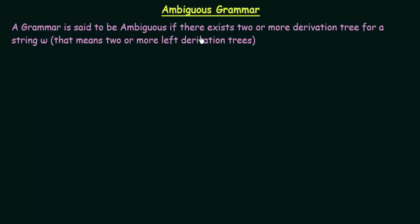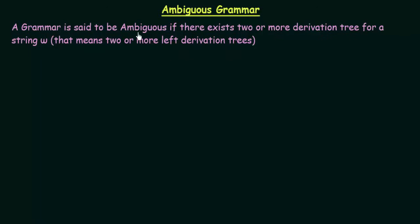A grammar is said to be ambiguous if there exist two or more derivation trees for a string omega — that means two or more left derivation trees. In the last lecture we studied about derivation trees and saw how we can draw derivation trees for strings of a certain grammar. If a string omega can be derived using two or more left derivation trees, then that grammar is said to be ambiguous. It is not that you form one using a left derivation tree and another using a right derivation tree — that is not the case. It is only when it can be formed using two or more left derivation trees that it is said to be an ambiguous grammar.